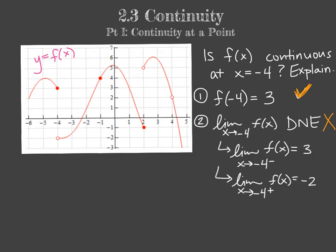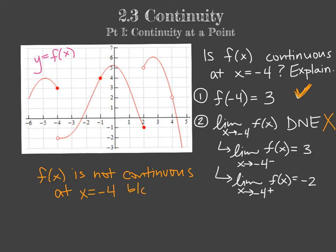We can't even go to number 3 because clearly 3 does not equal 'does not exist' — our function value and our limit are not the same. So our explanation will be: f of x is not continuous at x equals negative 4 because the limit as x approaches negative 4 does not exist. There may be multiple reasons a function is not continuous at a point, so we have to explain and give the reason why. It violated the second rule of continuity — that the limit has to exist.